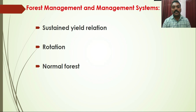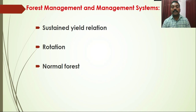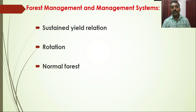Another important aspect in forest management is the Sustained Yield relation. Sustainable Yield is the yield obtained from a given forest area uniformly in perpetuity. It is the principle by which the yield from a given area is maintained so that it will not affect the yield for future generations — meaning the present-day yield should not exceed an acceptable level so that the interests of future generations are not compromised.